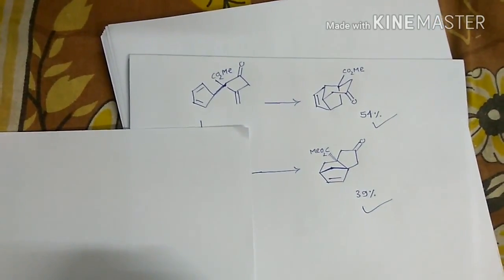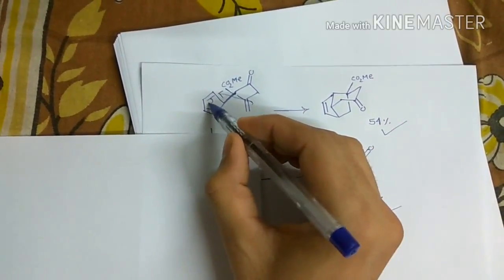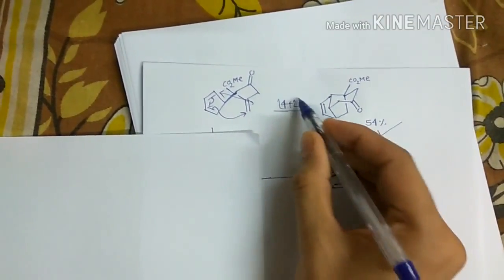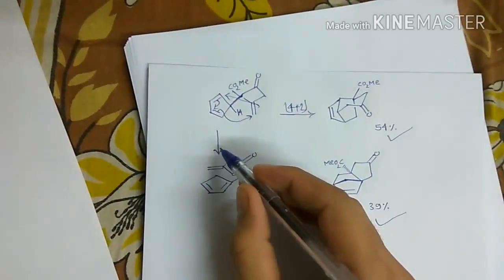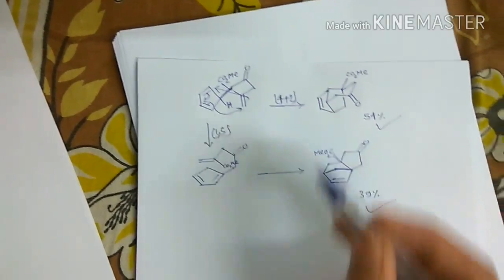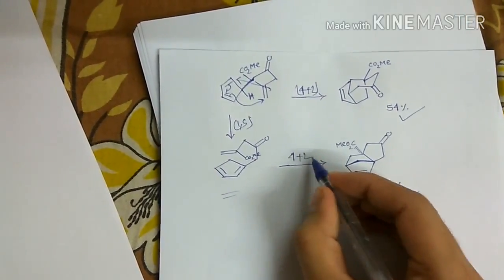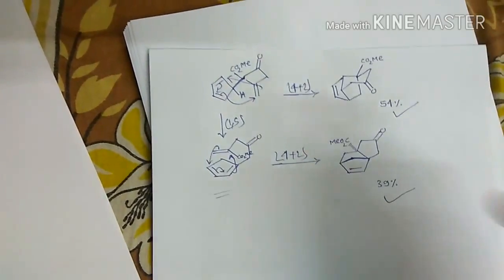So this comes from the same 4 plus 2 cycloaddition reaction. And sigmatropic shift of this hydrogen will give this one. And this again 4 plus 2 cycloaddition will give this product.